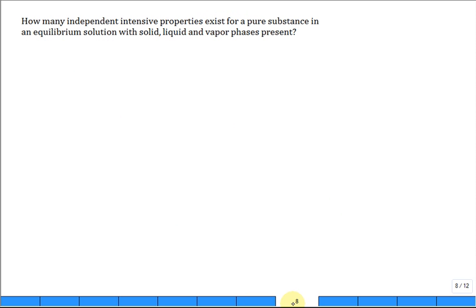Another application. How many independent intensive properties, that's how large is F, exists for a pure substance in an equilibrium solution with the solid, liquid, and vapor phases present. So how many phases are present? Three. How many components are there? Why is it one? Because they said it was a pure substance, not a mixture of water, ammonia, or whatever. It could be pure water, pure ammonia, pure carbon dioxide, whatever it is. So you have three phases in equilibrium for a pure substance.